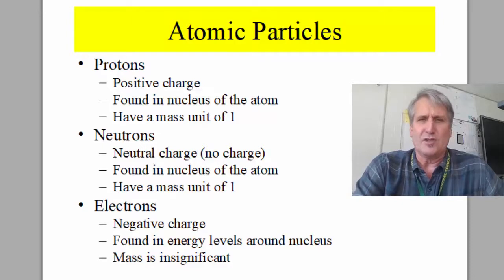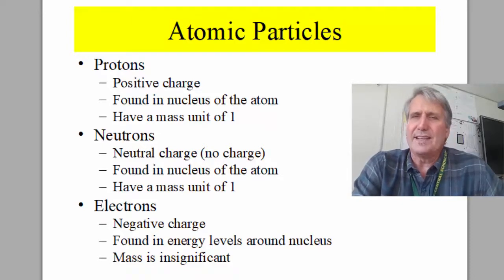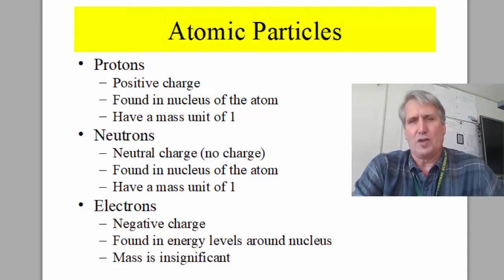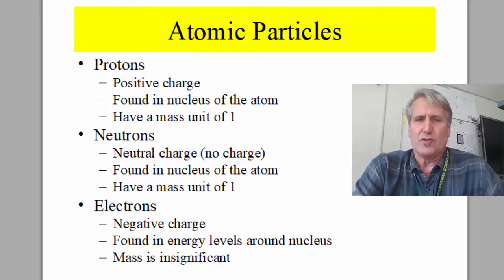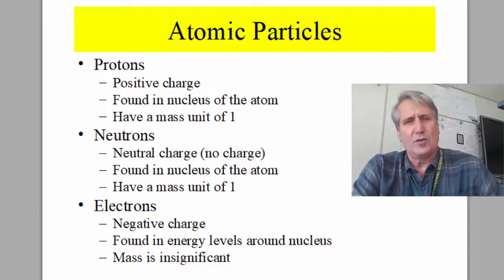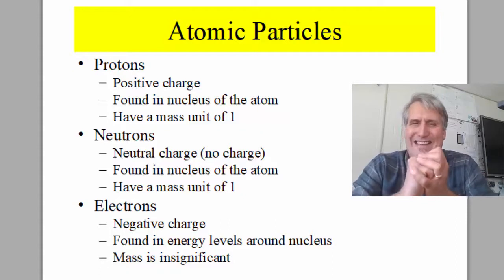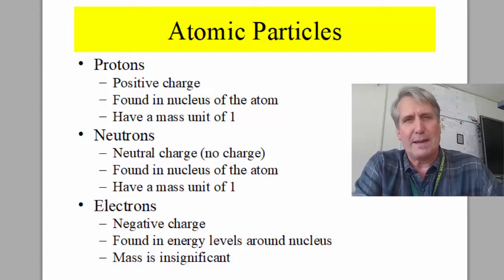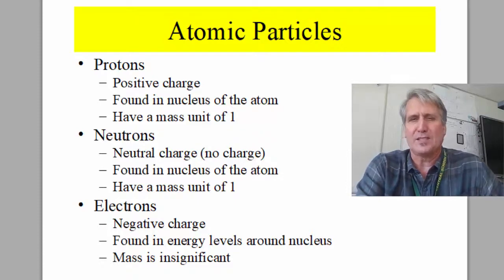Protons have a positive charge, they're found in the nucleus of an atom, and they have an atomic mass of one AMU — atomic mass unit. Neutrons are neutrally charged, which means they have no charge. They are found in the nucleus of the atom along with the protons in that dense nucleus, and they also have the same mass as a proton — one AMU, atomic mass unit.